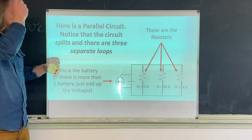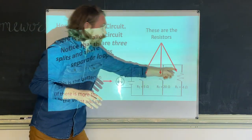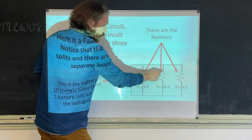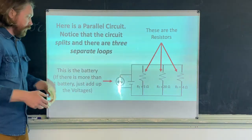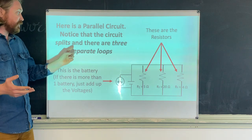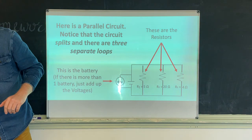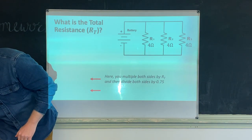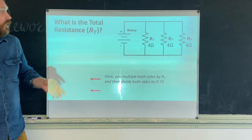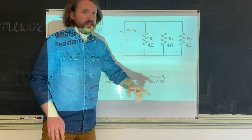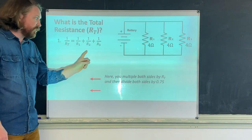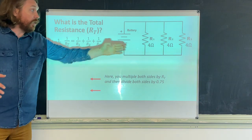Here's what a parallel circuit looks like. Instead of being in one big loop, each resistor gets its own separate loop. This is why we call them parallel — when you draw them, all the resistors are in their own loops parallel to each other. The battery is the same as before; if there's more than one battery, you just add them up. The circuit splits into three separate loops.